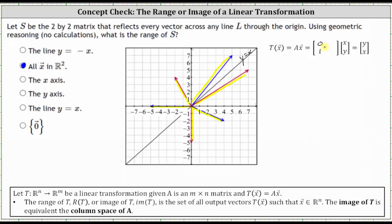The second column is the transformation of E2, or the vector (0, 1). If the vector (0, 1) is reflected across the line Y equals X, the output vector, or the image, is the vector (1, 0). So (1, 0) is the second column of the transformation matrix.